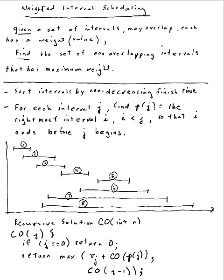Hi, we're in November 2011 and this is a series of clips for my algorithms class. We're talking about dynamic programming. This first example is called Weighted Interval Scheduling, and it is an example described in our textbook this term by Kleinberg and Tardos.